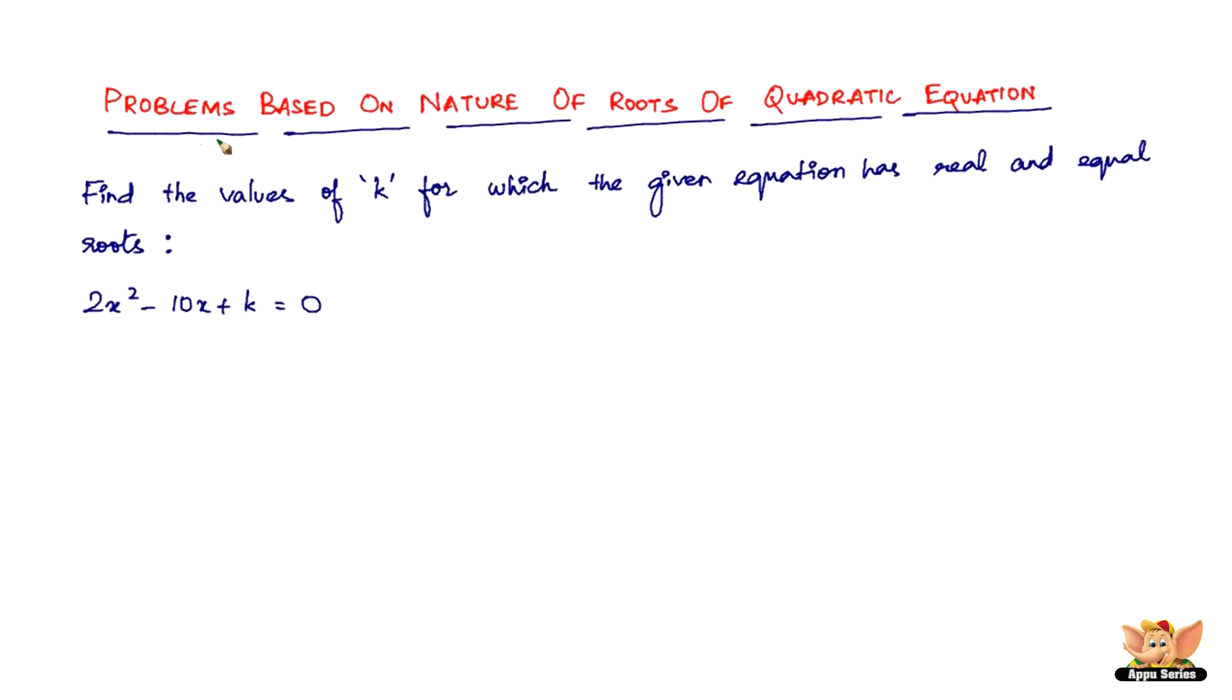In this video, let us continue to solve problems based on nature of roots of quadratic equations. The question here is find the values of K for which the given equation has real and equal roots. So this is the given equation: 2x² - 10x + k = 0. They say that the nature of the roots are real and equal, so accordingly we need to find the value of K. First of all, let us find out.